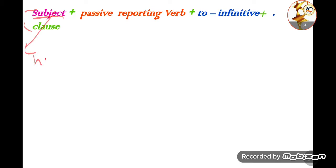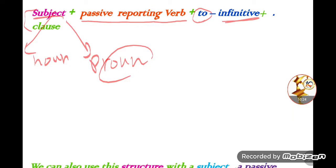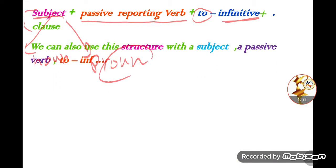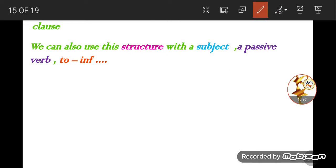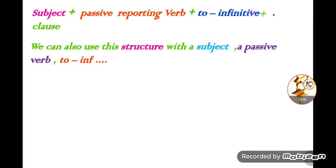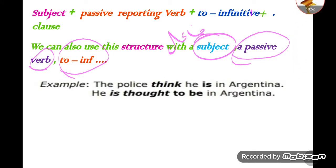In the personal form, we have a subject — the subject can be a noun or a pronoun. After the subject, we use the passive reporting verb. Then, notice that we don't use 'that'; instead we use 'to' followed by the infinitive form. We can also use this structure with a subject: subject + passive verb + to infinitive.